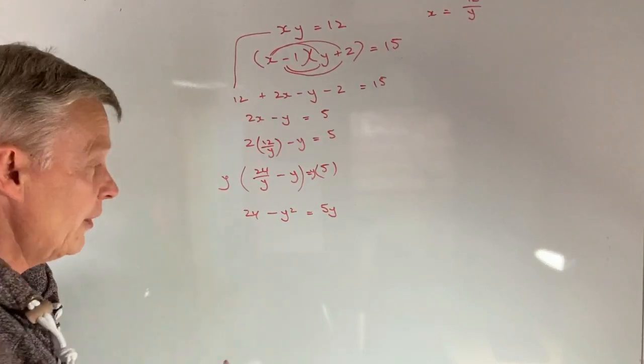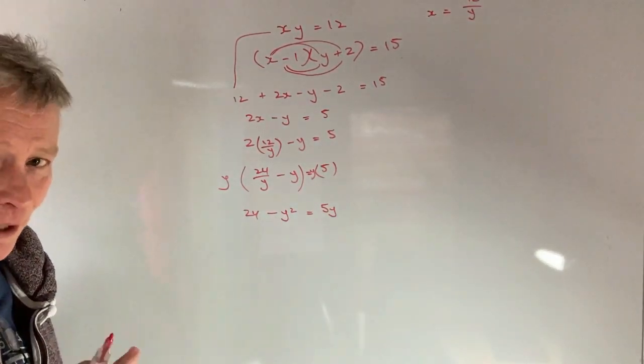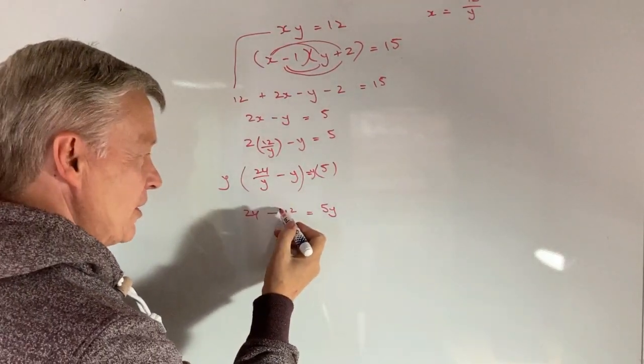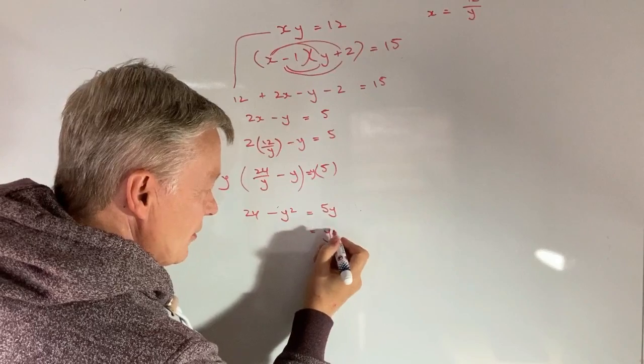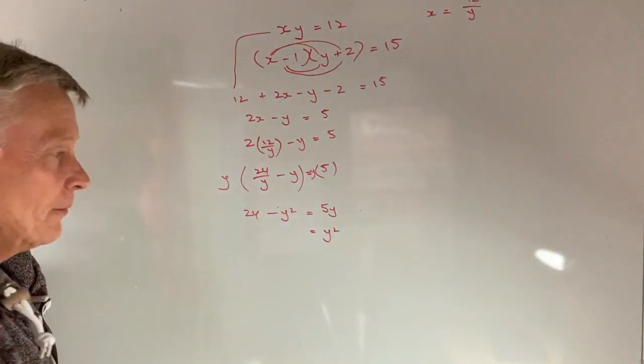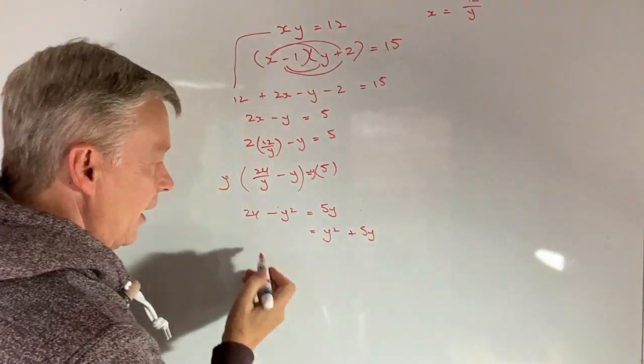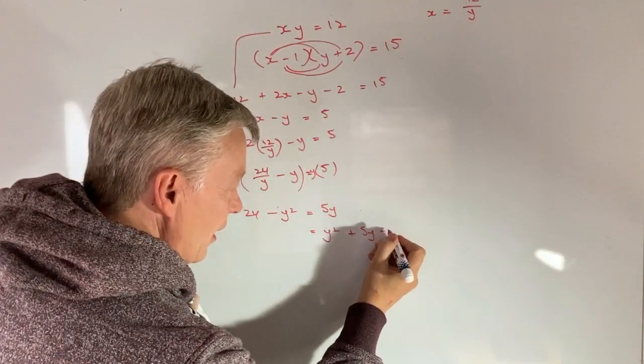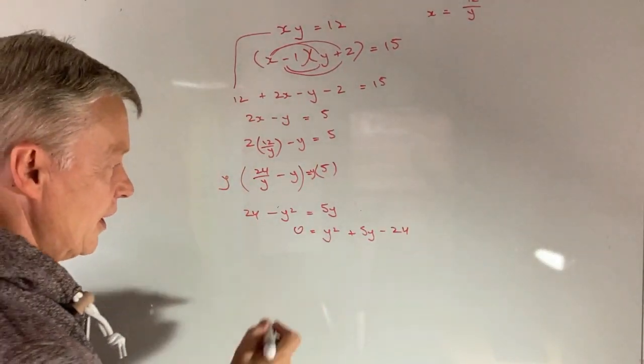The next thing is y times minus y. Well, that's minus y squared, and that's going to equal 5 times y. The second problem we've got, apart from this denominator of y, we've now got minus y squared. Don't want that. Got to get rid of that. What I'm going to do is bring it over to the right-hand side, and I'm going to write that as y squared. I'm going to leave the 5y where it is. And then I've got 24, which I'm also going to take to the side. That's going to be minus 24. That's going to all equal 0.